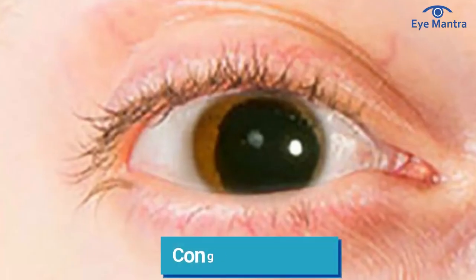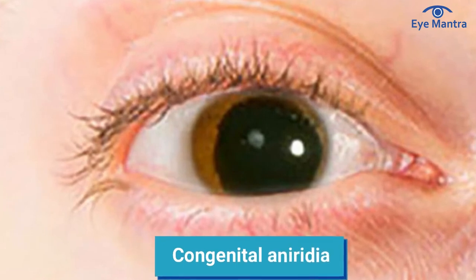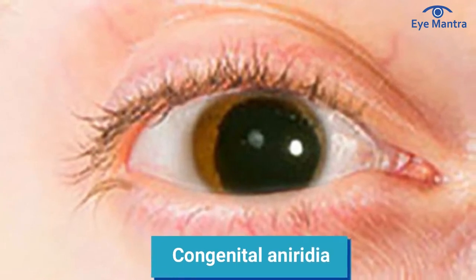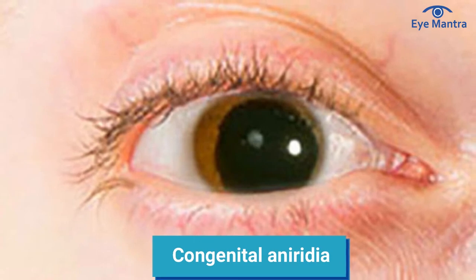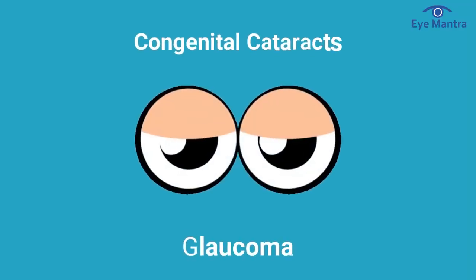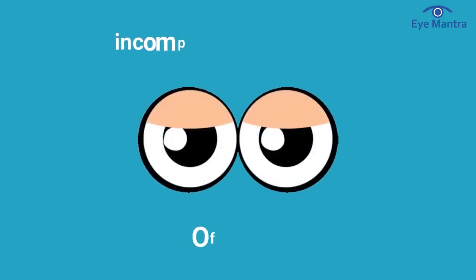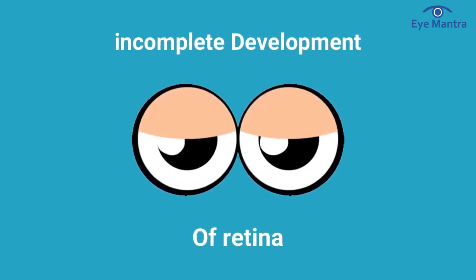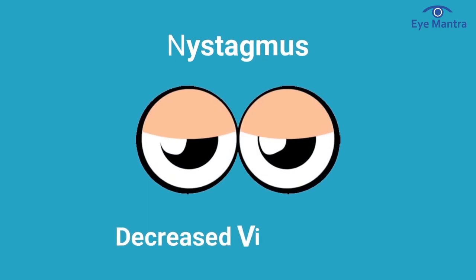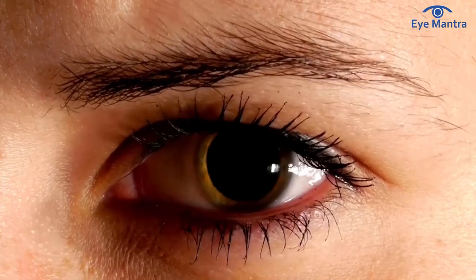Congenital aniridia is a rare condition where a person is born with a partially or completely absent iris, resulting in a very large pupil. Aniridia usually affects both eyes and is accompanied by other serious eye problems such as congenital cataract, glaucoma, incomplete development of the retina and optic nerve, nystagmus, and decreased visual acuity. Because there is little or no iris to regulate the amount of light entering the eye, people with aniridia are very sensitive to light.